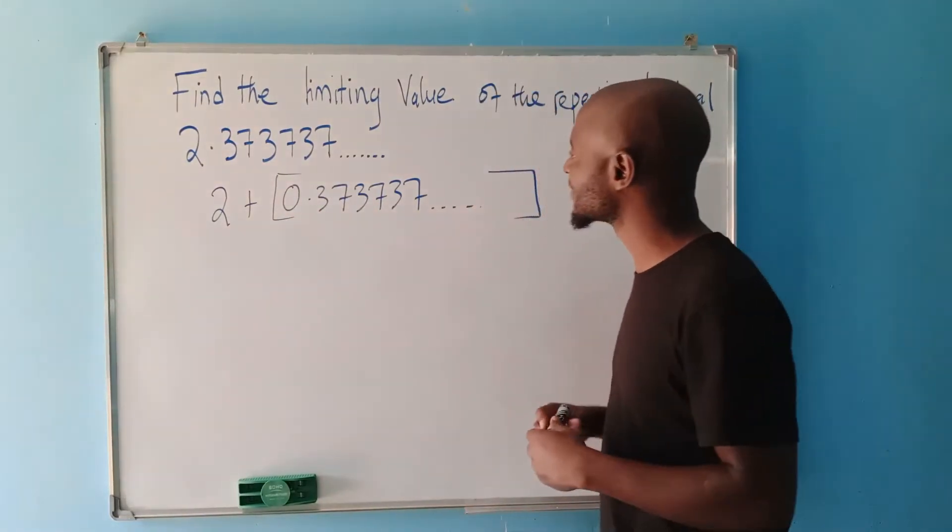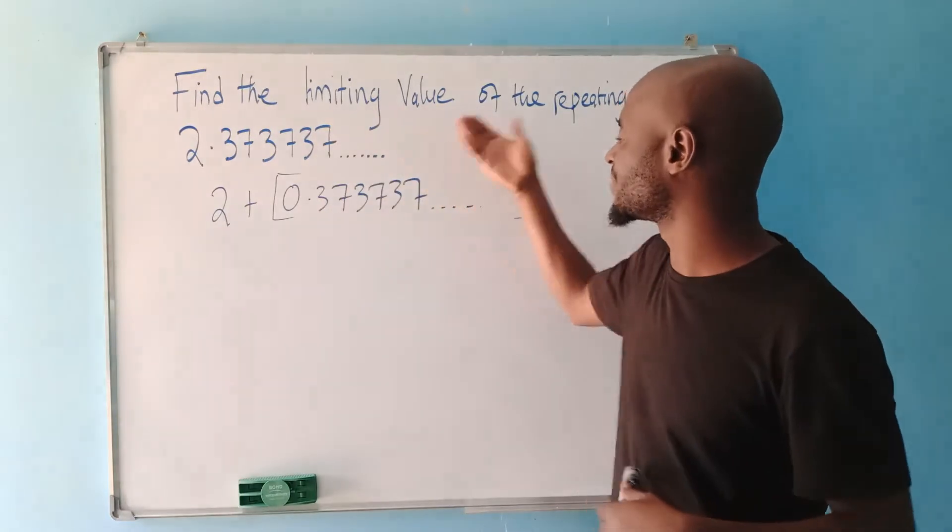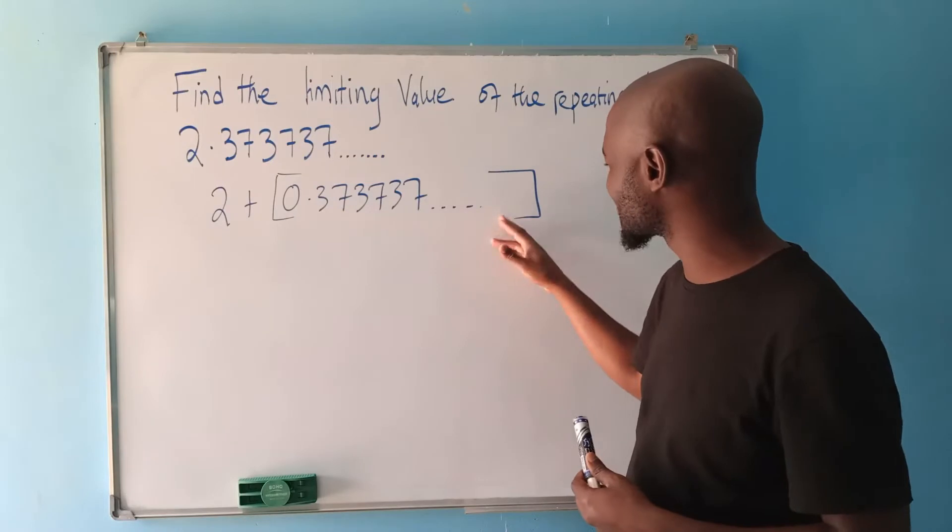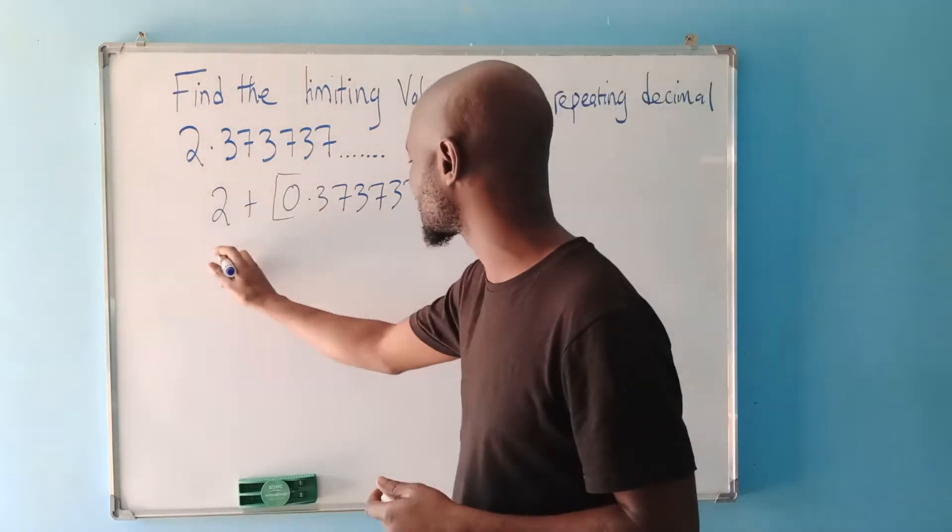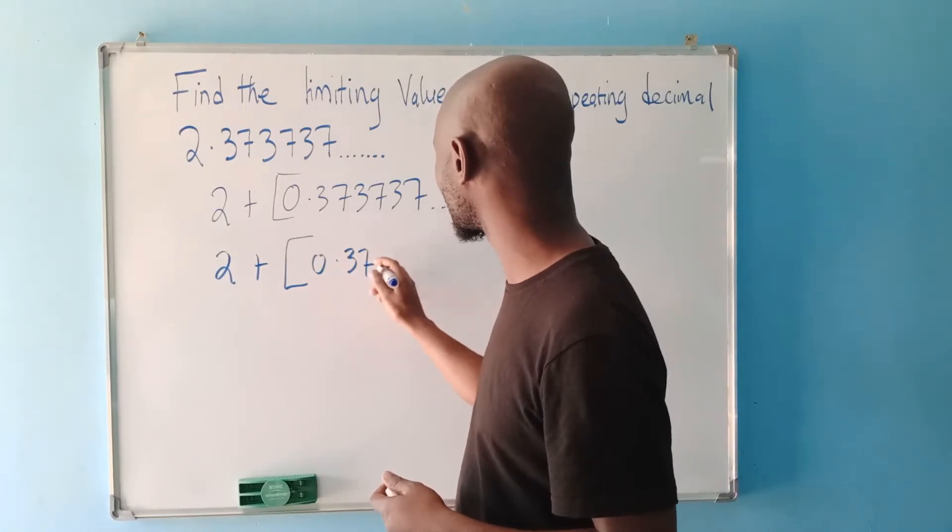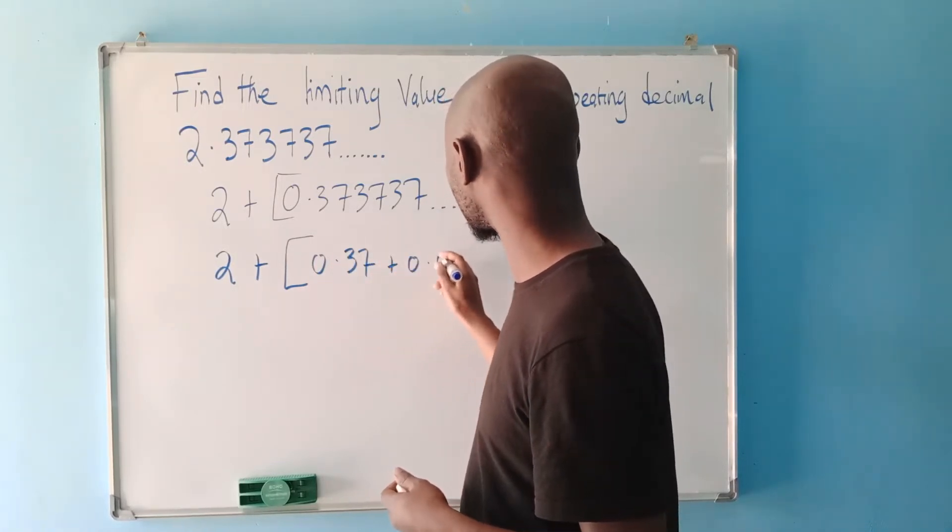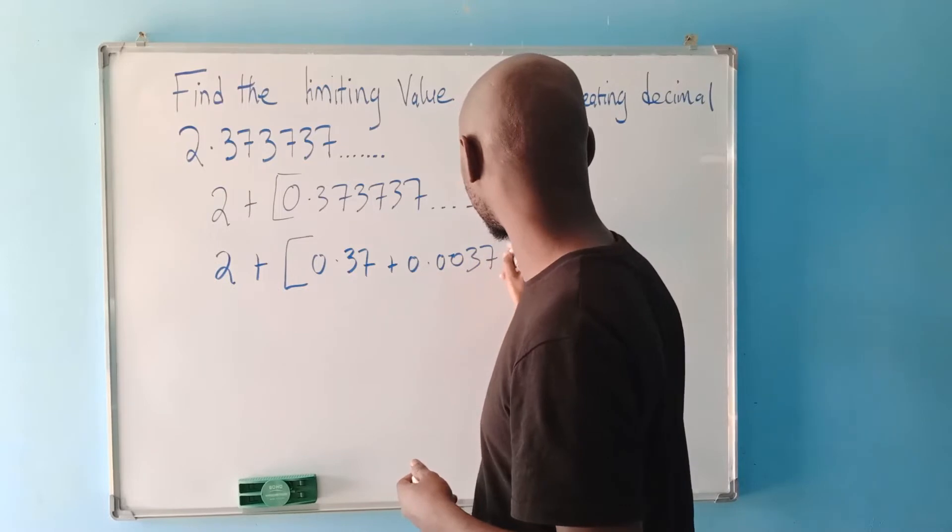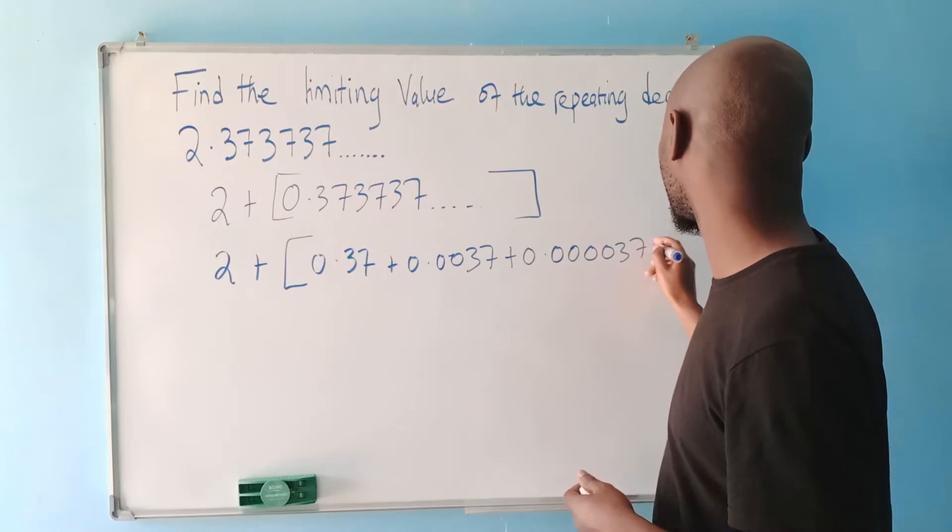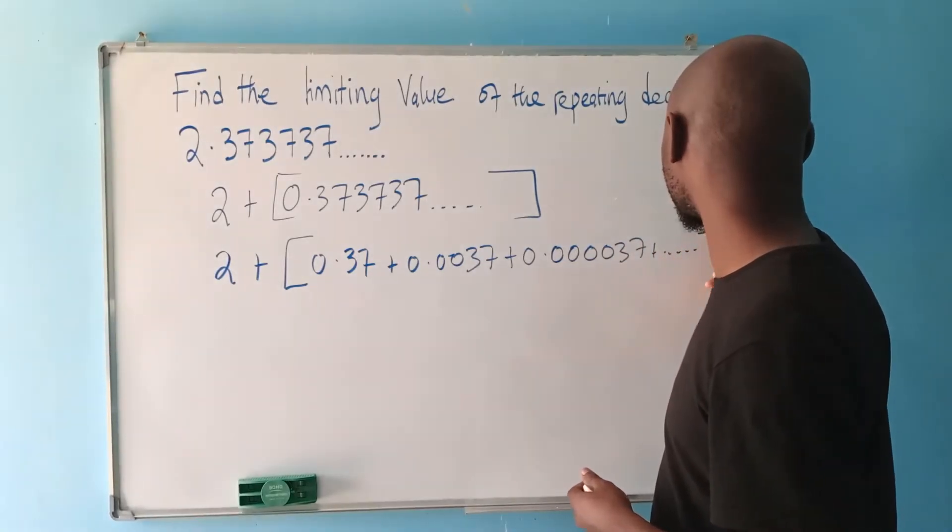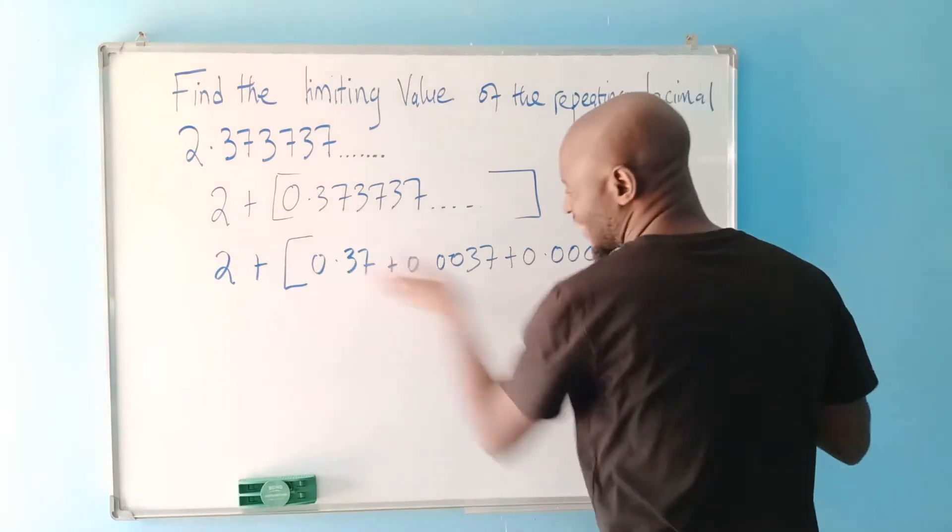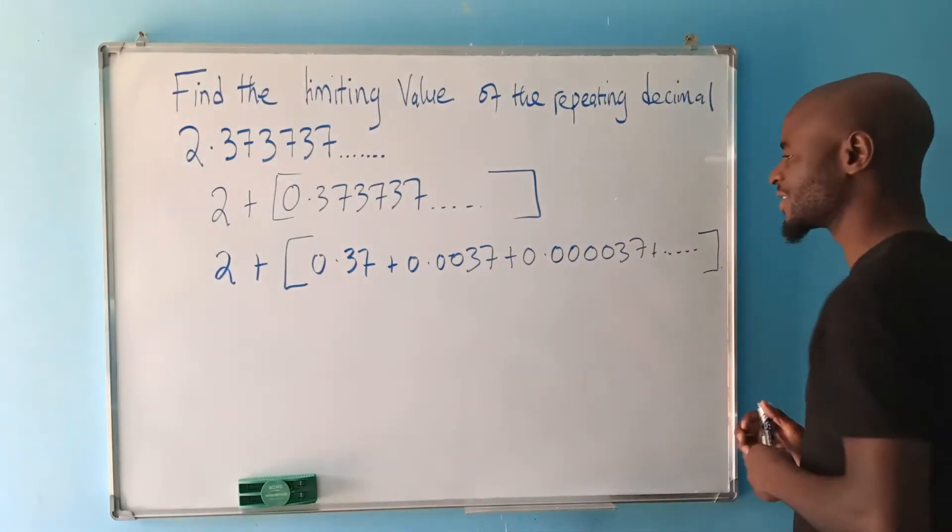If I try to write this number in a different format and say this is 2+, then we have 0.373737. This continues to repeat. So this number here is the one that is repeating. Now we need to find the limiting value as the repetition continues. We can dismantle this number. This is the same as 2, plus, this is going to be 0.37, plus 0.0037, plus 0.000037, plus, and so on.